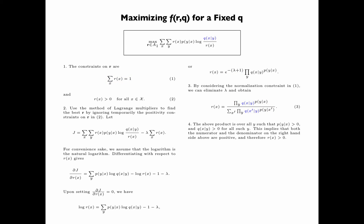The product in the above equation is over all y such that P(y given x) is greater than 0, and for all such y's, Q(x given y) is greater than 0. This implies that both the numerator and the denominator on the right hand side are positive, and therefore Rx is greater than 0.